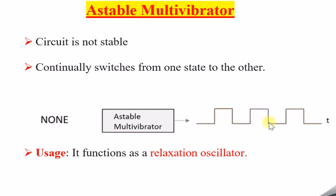The output is an on state to off state, on state to off state — this is the state of the amplifiers or transistors. One after the other: on, off, on, off, on, off — continuously. There is no stability achieved at all. Even without applying any input, I am getting continuous switching from one state to another — on to off, on to off — like this. Hence it is called an astable multivibrator.